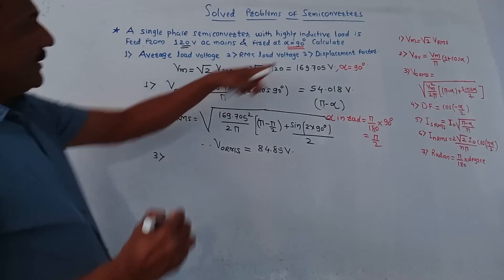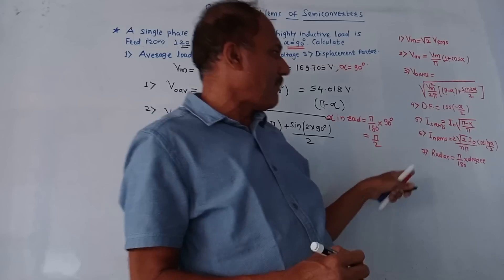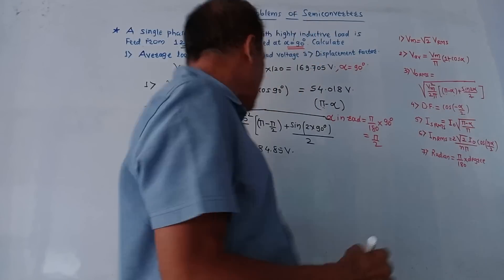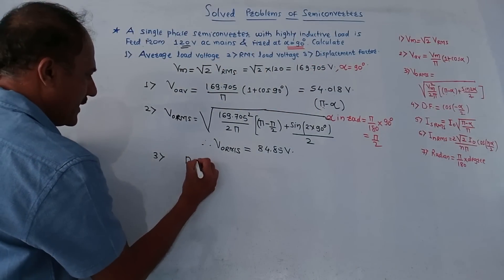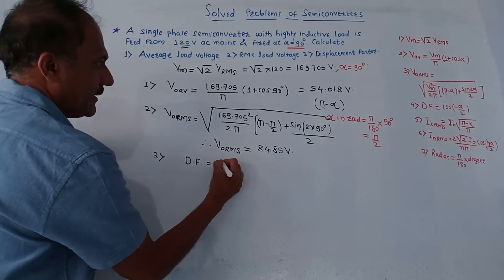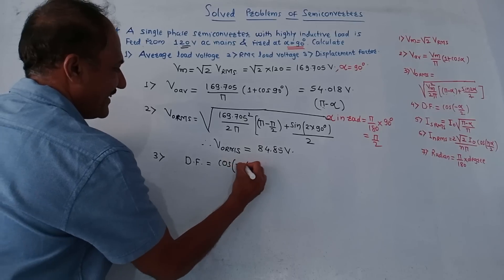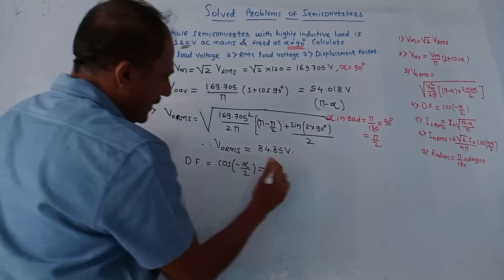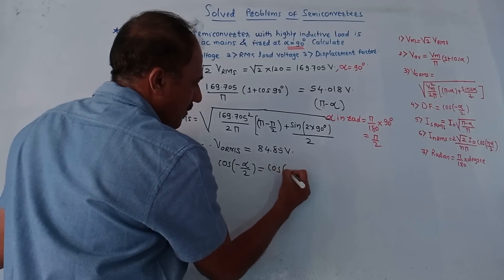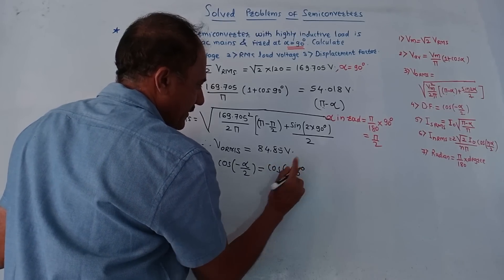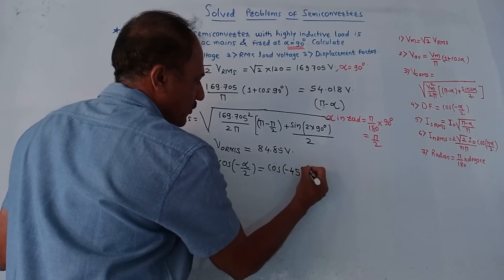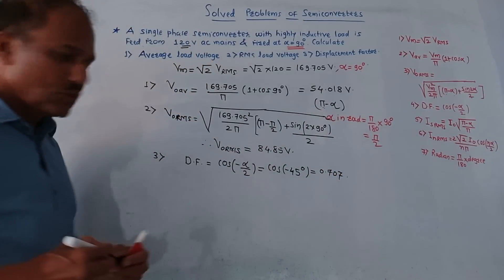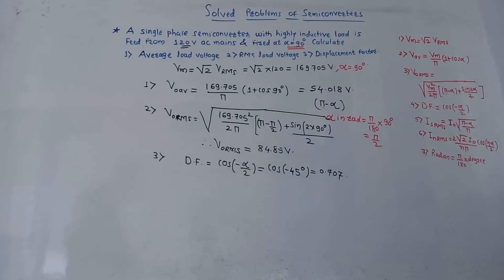Third term: displacement factor, abbreviated as DF. We have the formula DF = cos(−α/2). Value of alpha is 90 degrees, so DF = cos(−45°) = 0.707. This is the value of the displacement factor.